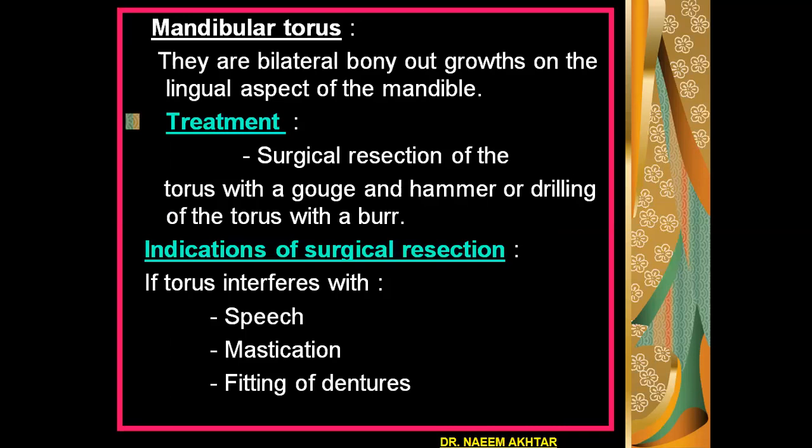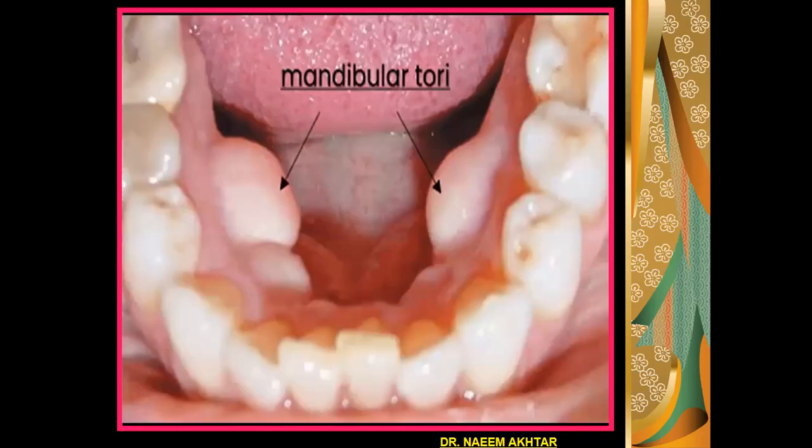The mandibular torus consists of bilateral bony outgrowths present on the lingual aspect of the mandible. Treatment for torus is surgical resection using a gouge and hammer, or sometimes drilling with a burr. This surgical treatment is needed if the torus interferes with speech or mastication, or if there is a history of ill-fitting dentures. This photograph of mandibular tori shows two bony outgrowths on the lingual aspect of the mandible.